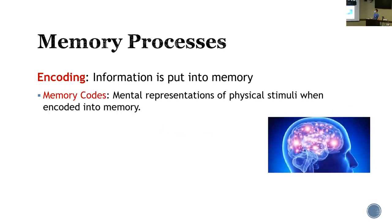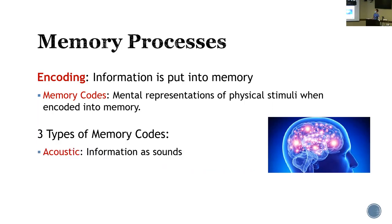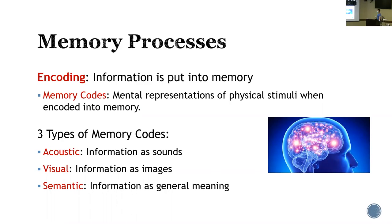Encoding is when information is put into memory. We have memory codes — these are the mental representation of physical stimuli when encoded into memory. We have three types of memory codes. First, acoustic: we code the information as sounds. Second, visual memory codes: we store information as images. Last, semantic memory codes: information stored as general meanings. For example, when I say 'pen,' you know what that means — that would be semantic.